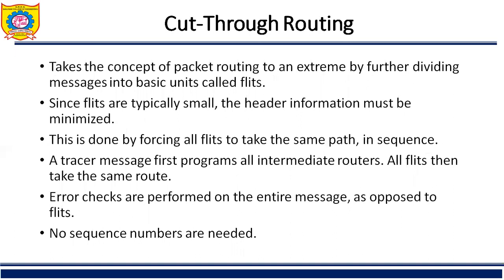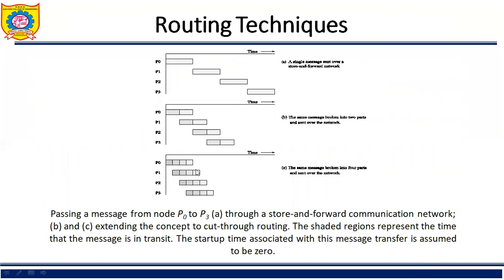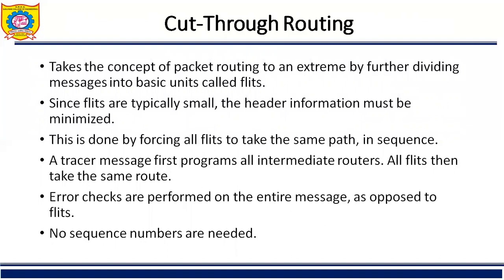Cut-through routing takes the concepts of packet routing to an extreme by further dividing the message into basic units called flits. Since flits are typically small, header information must be minimized. This is done by forcing all flits to take the same path in sequence. A tracer message first programs all intermediate routers, and then all flits take the same route. Error checks are performed on the entire message as opposed to individual flits.